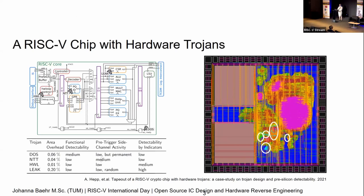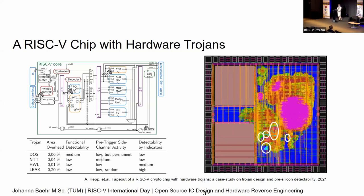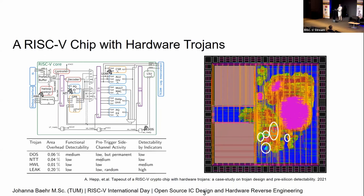I'll talk about this very quickly. We have a RISC-V core — it used to be from PULP. We put four hardware Trojans in there. One of them is in the hardware loop. One of them is in the tightly coupled post-quantum accelerator — that's the one where it says PQ. It's an NTT transform and we changed some stuff in there. We have something that leaks a secret key via side channel, and we have a very standard DOS that just basically kills the chip if the trigger is started.